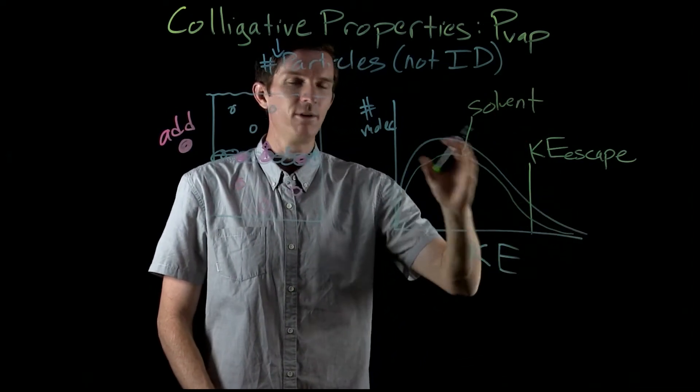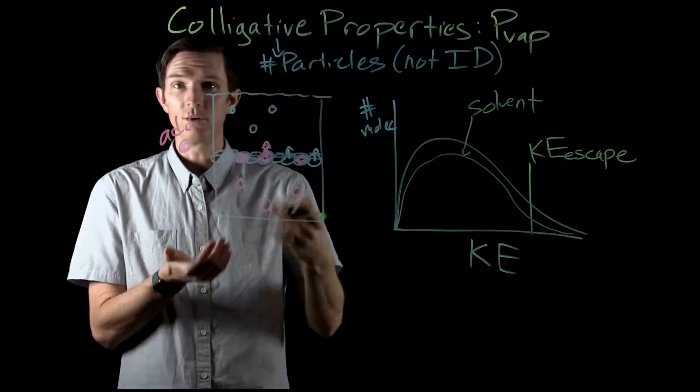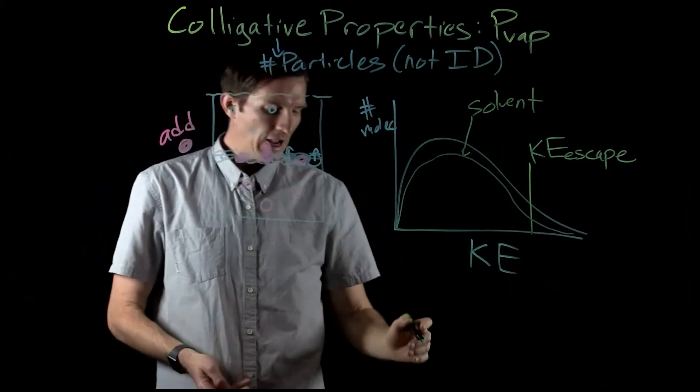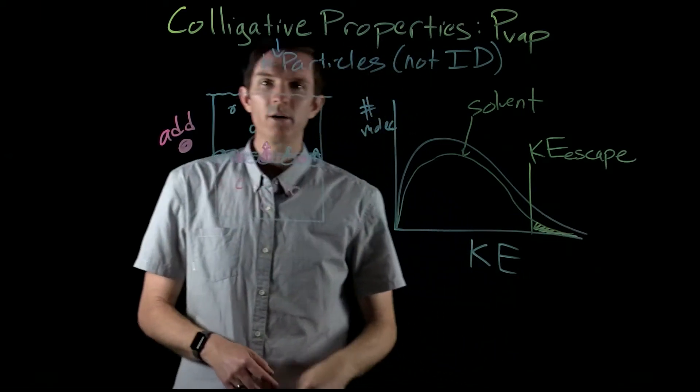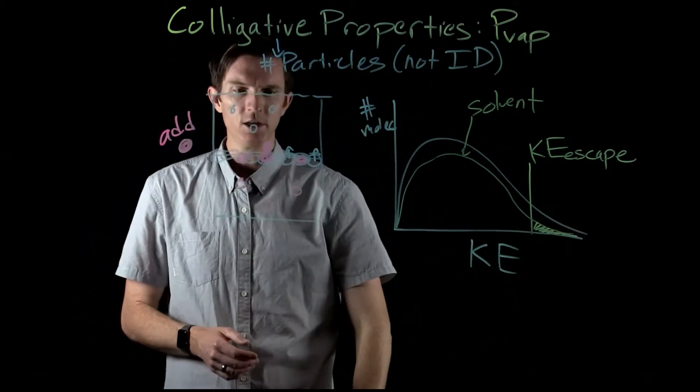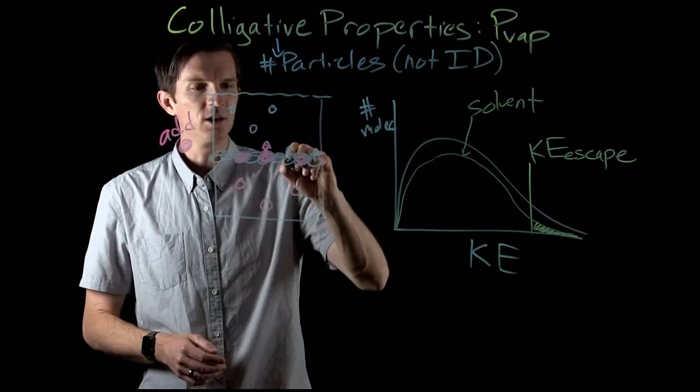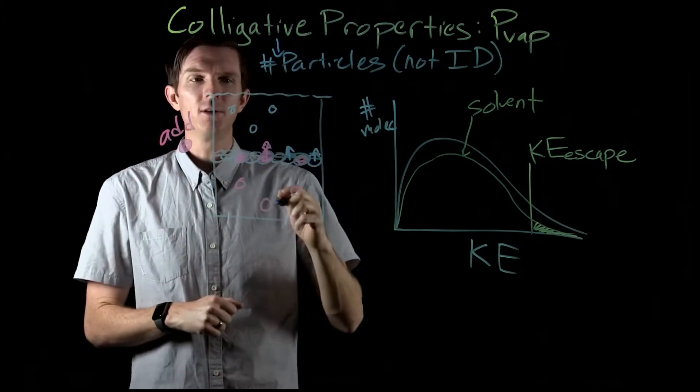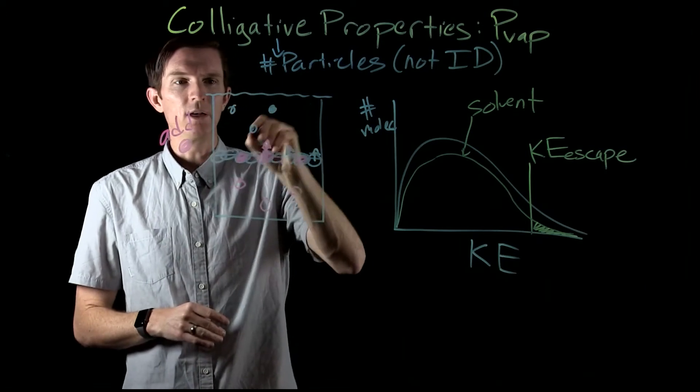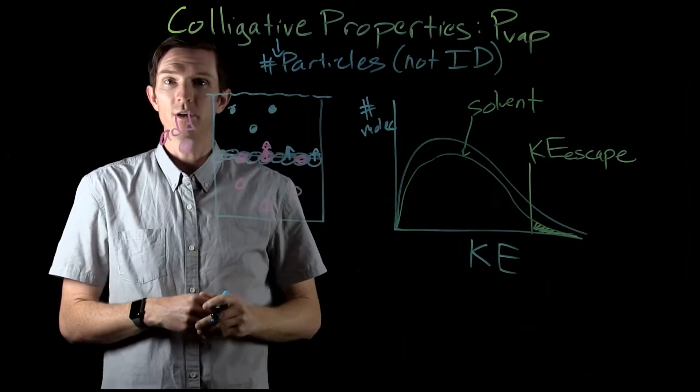The rest of these particles, to fill in the rest of that curve, would be our solute particles, whatever we dissolved. And so now what we see is we have fewer particles that have an escape kinetic energy. And so therefore, we're going to see fewer of these particles leave and go up into the gas phase, which means we're going to end up with a lower vapor pressure.